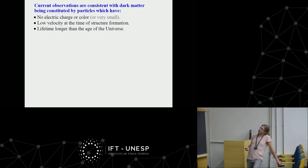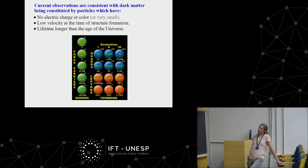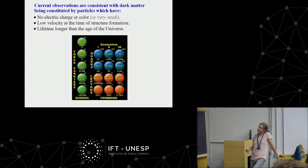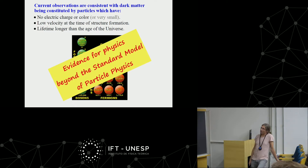To summarize the properties of dark matter particles: they have no charge and no color, they have low velocity at the time of structure formation, and they have a lifetime longer than the age of the universe. Comparing with the standard model, there is no particle satisfying all three conditions simultaneously. The closest are neutrinos — long-lived and electrically neutral — but they were relativistic at the time of structure formation. Therefore, the existence of dark matter, interpreted as a particle, is evidence for physics beyond the standard model.